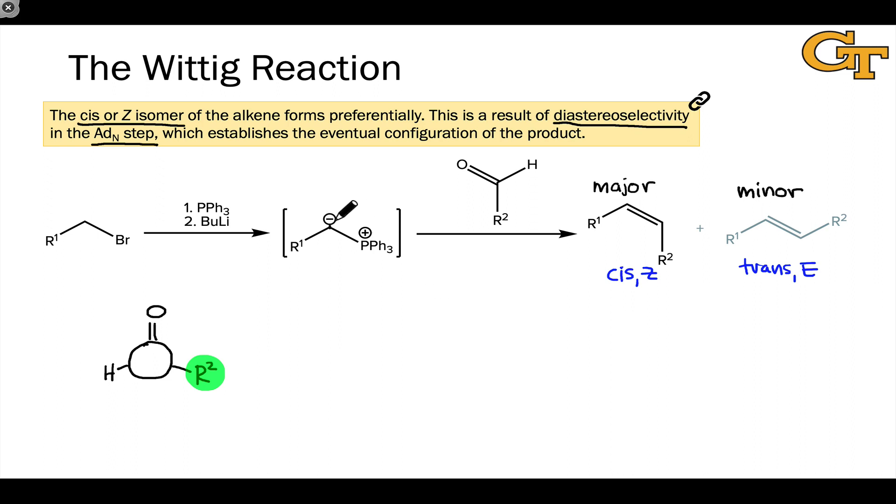Taking a look at the ylid now, keep in mind that the ylid has an additional hydrogen atom positioned here. Like the carbonyl substrate, the ylid has two groups linked to the ylid carbon, one of which is much larger than the other.